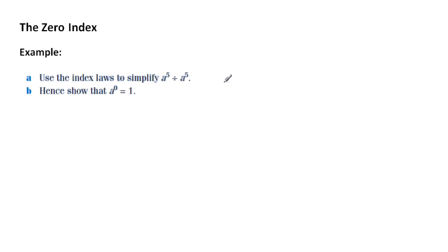Well because this is a division we write down our base a and our indices five take away five. Remember the same bases, a division, we subtract the indices and therefore we get the solution a to the zero.